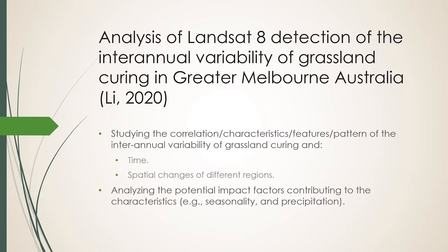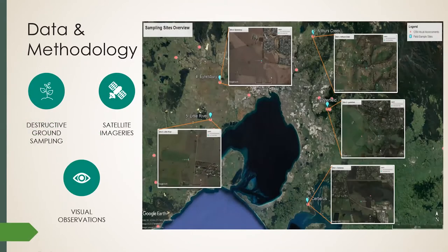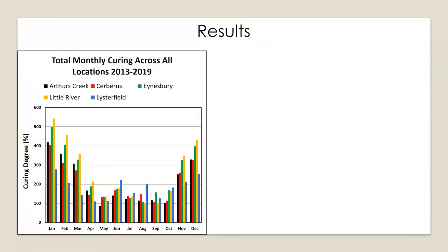This research establishes the use of Landsat-8 to estimate grassland curing as an effective method. Data and methodology used in this study include destructive ground sampling, satellite imagery, and visual observations. The picture on the right shows my five sample sites in Victoria.